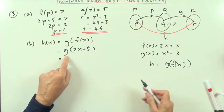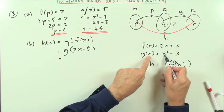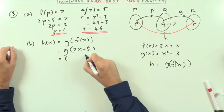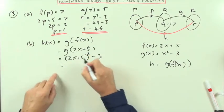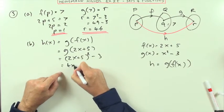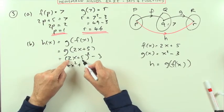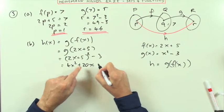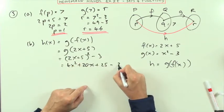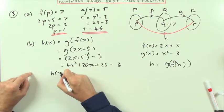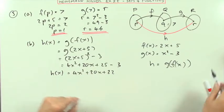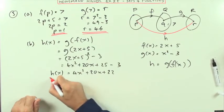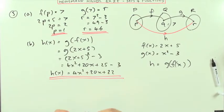And what does g do to anything it gets hold of? It squares it and takes away 3. So if it gets hold of that, it'll square it and take away 3. So what's that? Square the bracket: 4x squared plus twice the product 10, 20x, square the last 25, take away the 3, which means h of x is going to be 4x squared plus 20x plus 22. There, question 3.